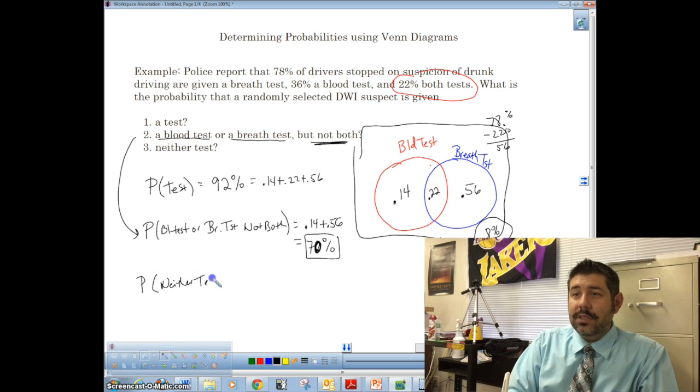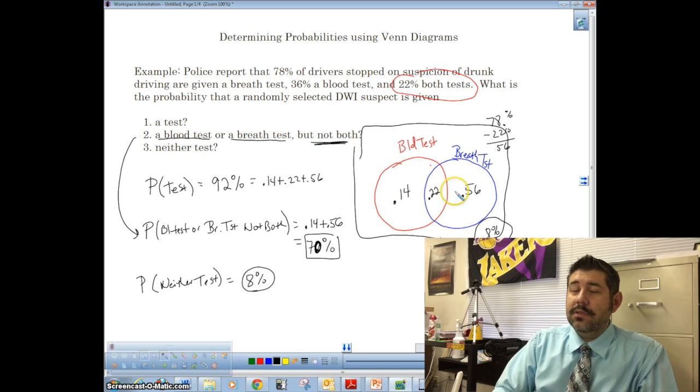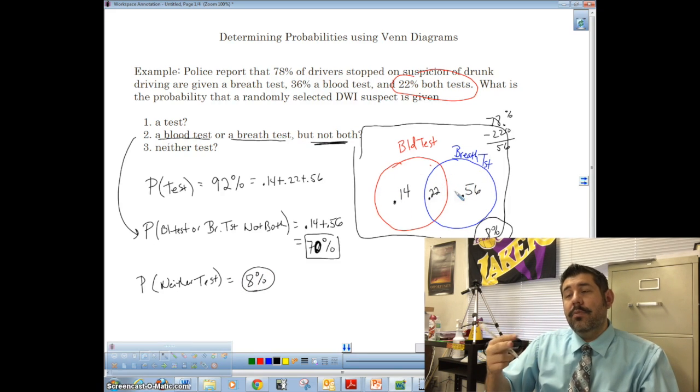All right. And then what's the probability of neither test? Okay, so they don't get anything. No test. Well, we figured that out just a little while ago. That's 8%. All right. And that we got by subtracting all of these from 100%. Right? That's the people that's left over.